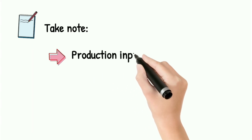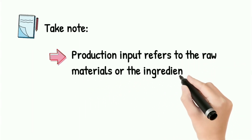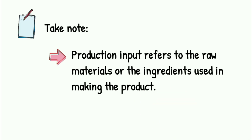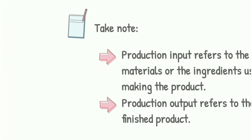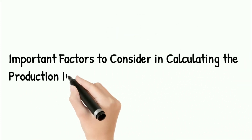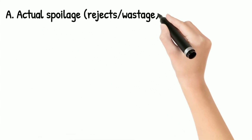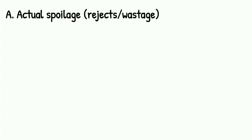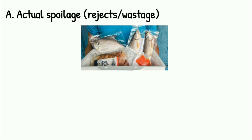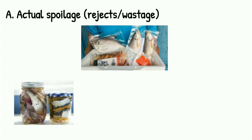Take note of this. In short definition, production input refers to the raw materials or the ingredients used in making the product. Production output refers to the finished product. Important factors to consider in calculating the production inputs and outputs in fish processing: first is the actual spoilage, rejects, or wastage. Actual spoilage or rejects and their corresponding percentage depend on the product to be made. The products left during packing are not classified as spoilage or rejects. In pickled fish, for example, the skin of the calamansi, garlic, and the intestinal organ of fish are included in the spoilage.